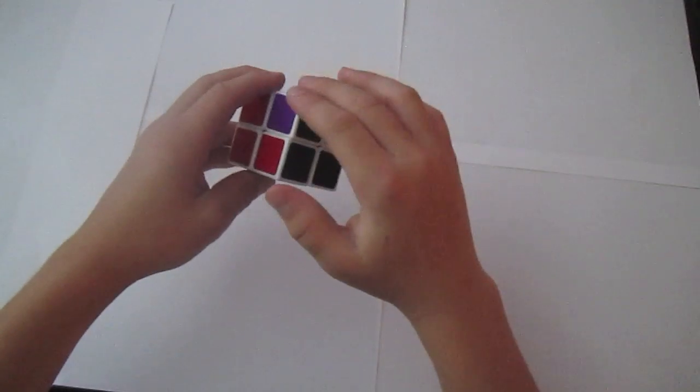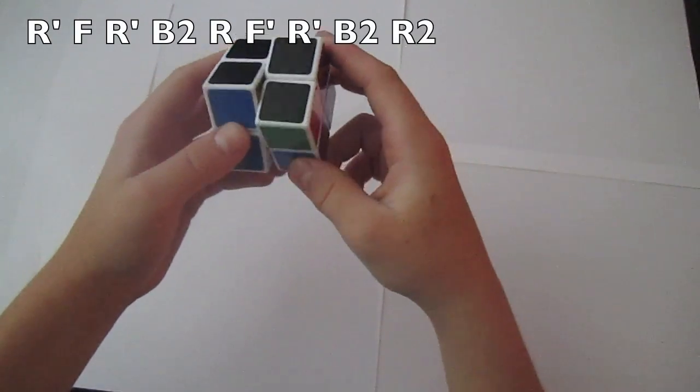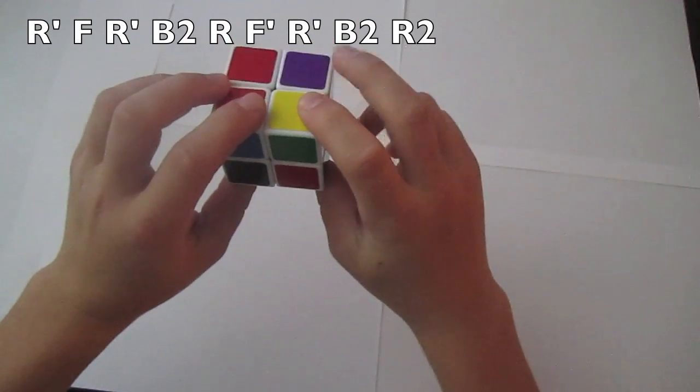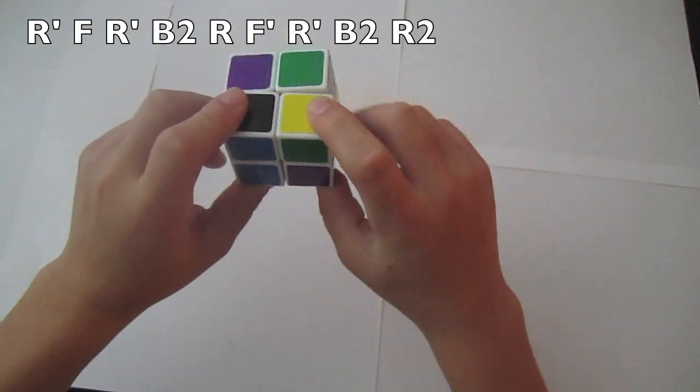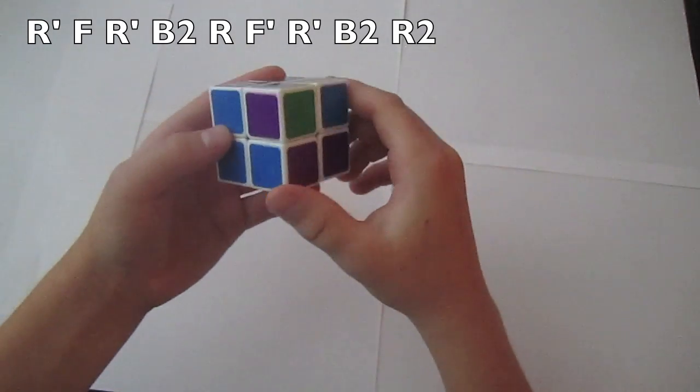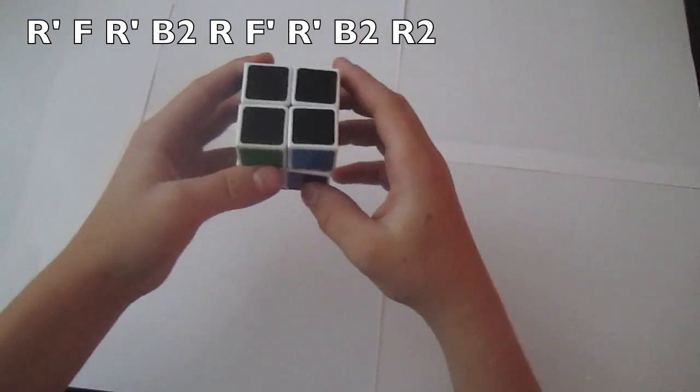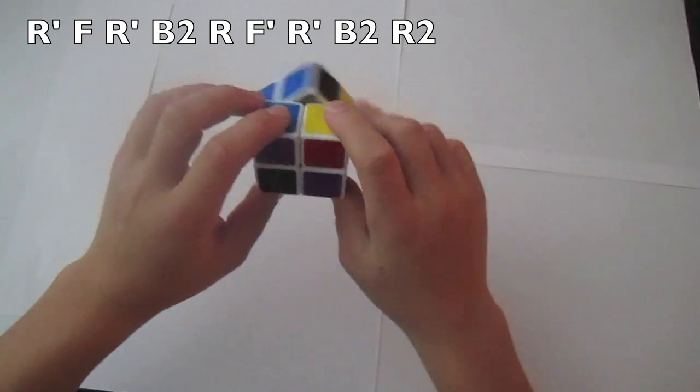The algorithm you're going to use is R prime F R prime back to R F prime R prime back to R2. Now what happened is I have these two, and I have to switch these two. You're going to do the same exact algorithm: R prime F R prime back to R F prime R prime back to R2.